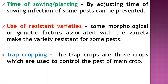Another cultural practice is time of sowing — adjusting the planting time to minimize pests or help the crop escape peak pest pressure. For example, early sowing of sorghum can reduce the population and incidence of shoot fly. By adjusting sowing time, the seedlings can escape the critical infestation stage of the shoot fly. This is a very important practice.